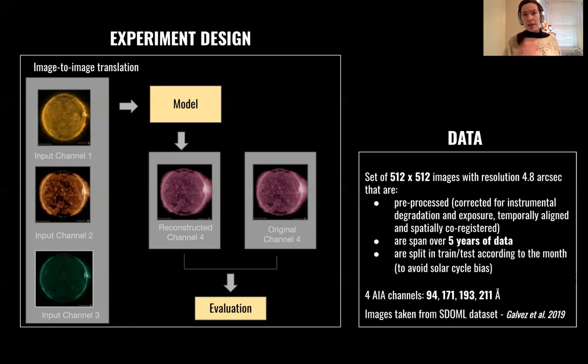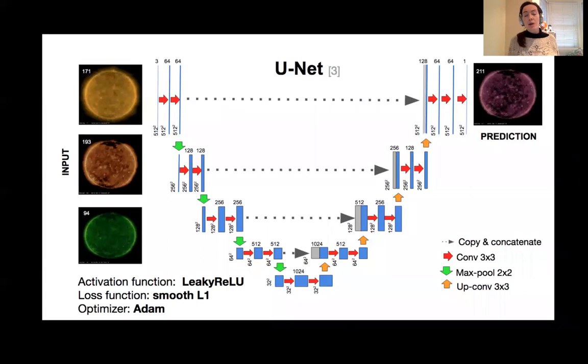And it contains images from SDO that are already pre-processed and ready for machine learning purposes. And we use data from over five years and splitting in training tests according to the month to avoid any bias due to the solar cycle. And yeah, just to be as much general as possible. And here we can see what is the specific architecture that we use for this experiment. That is a UNET. UNET is an architecture that has been first designed for medical images for segmentation.